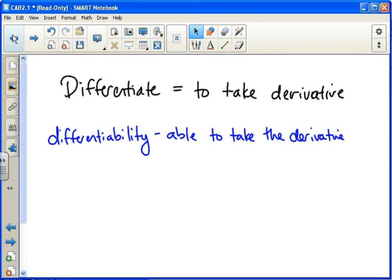The second one's an adjective, and that's differentiability, or differentiable. Differentiable is actually the adjective. A function is differentiable if you are able to take the derivative of it.